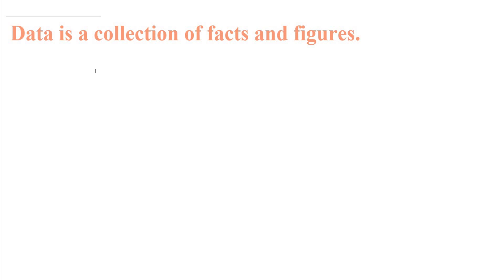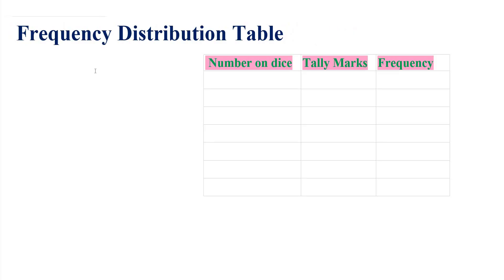So let's learn about the frequency distribution table. Suppose a dice is rolled 10 times with the following results. When we rolled the dice the first time, we got 6. After that: 5, 4, 4, 1, 2, 2, 3, 2, 6.